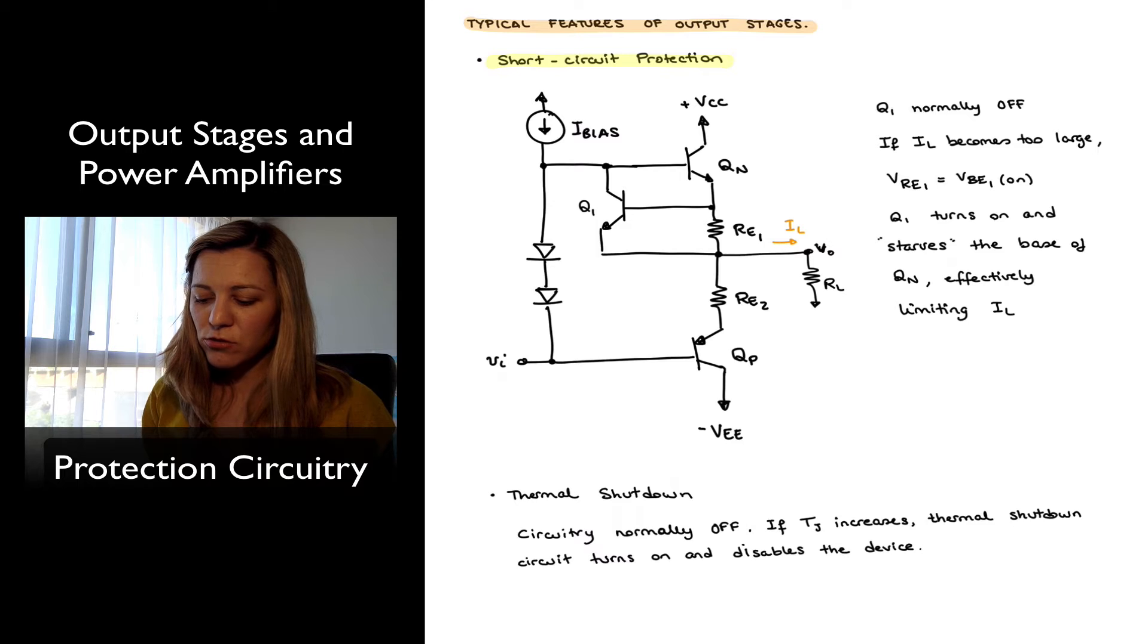Notice that the voltage across resistor Re1 will also increase, and at some point, the voltage across Re1 will equal the turn-on voltage for the VBE junction of Q1. At that point, when the current reaches that point, then transistor Q1 will turn on.